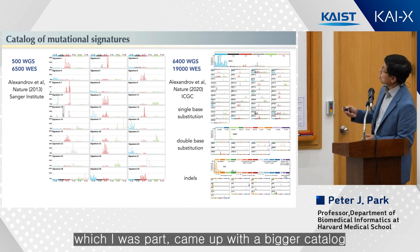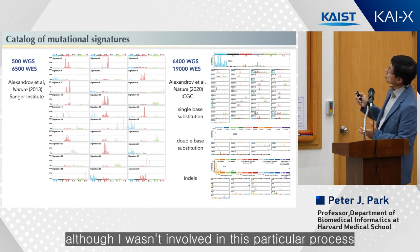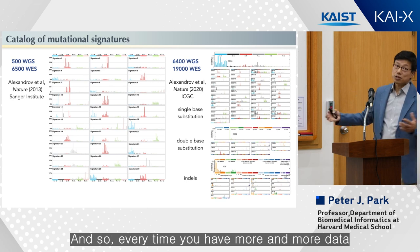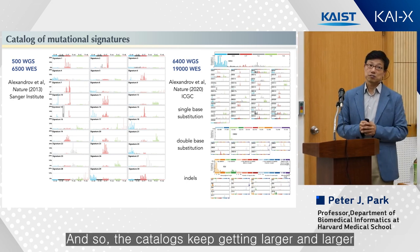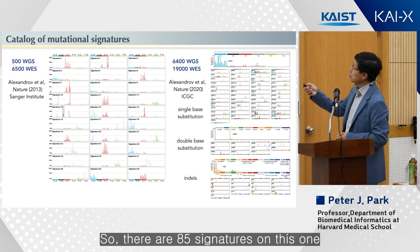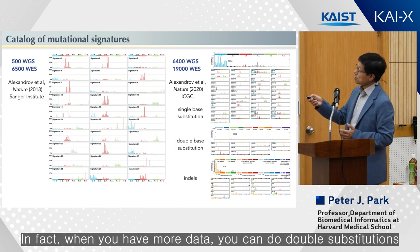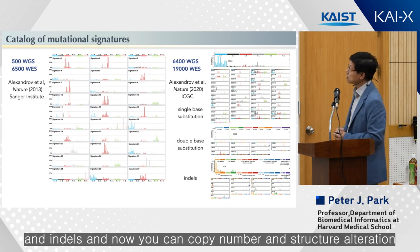A subsequent effort — of which I was part — came up with a bigger catalog, though I wasn't involved in this particular process. Every time you have more and more data, you have greater statistical power to find these signatures, so the catalogs keep getting larger. There are now 85 signatures in this one. In fact, with more data you can do double substitutions, indels, and now copy number and structural alteration signatures.